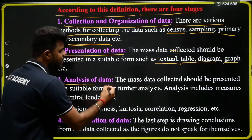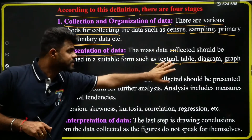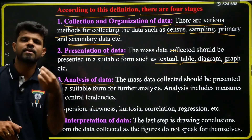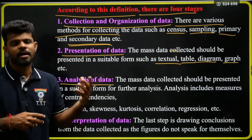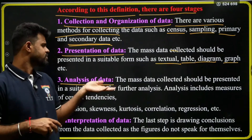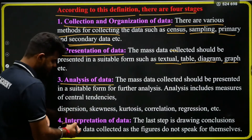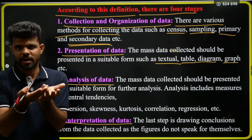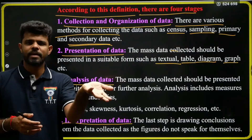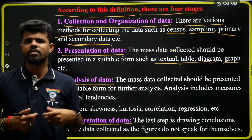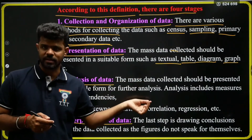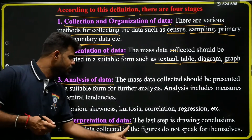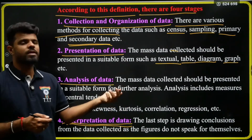The third stage is analysis of data. After collecting and presenting the data, you apply statistical tools and formulas to analyze it. The fourth and last step is interpretation of data — writing a conclusion based on your statistical analysis so that everybody can easily understand what type of analysis has been done. These are the four stages of the definition of statistics in the singular sense: collection and organization, presentation, analysis, and interpretation of numerical data.